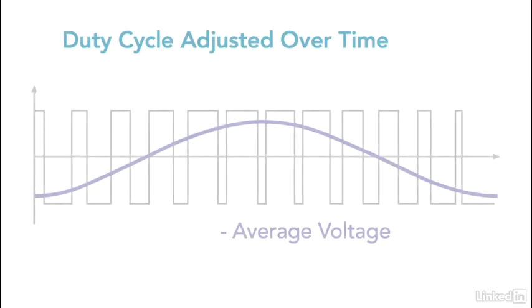Duty cycle is the magic behind PWM. On a high frequency wave, by adjusting the amount of time the signal is high, you can change the average voltage over time to get any value between high and low. This is shown by the gray line.